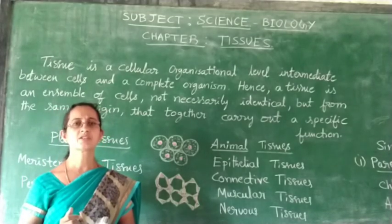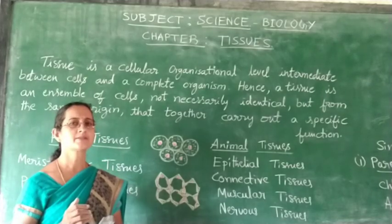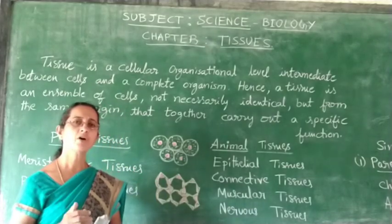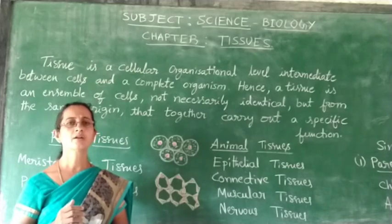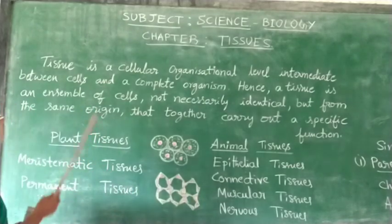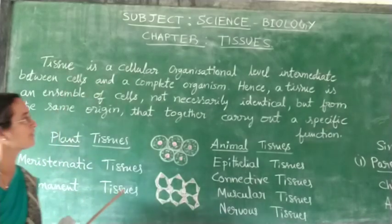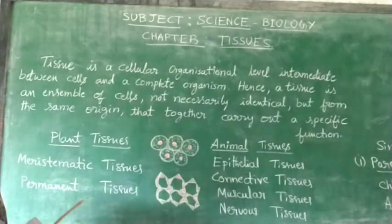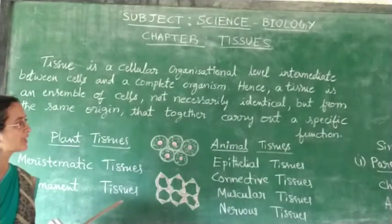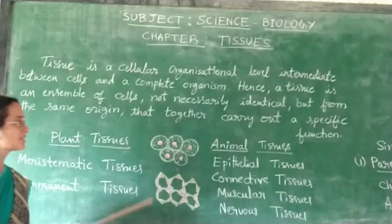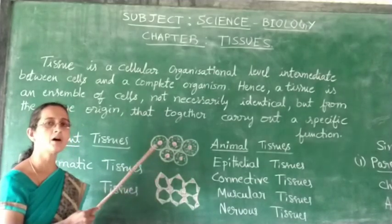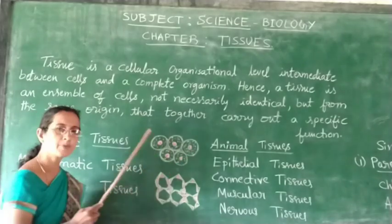Living organisms consist of cells. A group of cells with the same origin, similar structure, and performing a specific function is called tissue. Tissue is a cellular organization level intermediate between cells and a complete organism. Hence a tissue is an ensemble of cells, not necessarily identical but from the same origin, that together carry out a specific function.